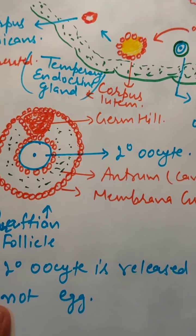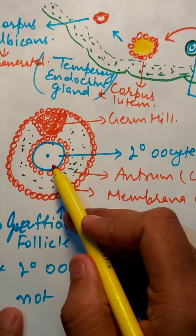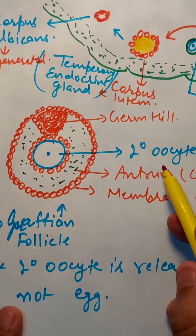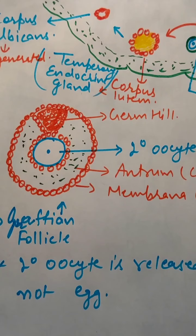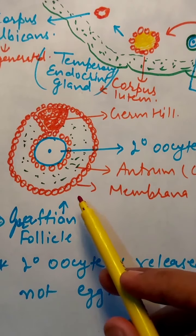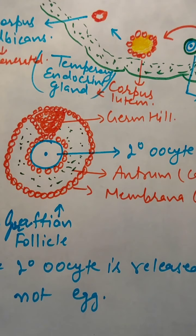The Graafian follicle contains a secondary oocyte inside it. The secondary oocyte is present in the Graafian follicle and it is covered with different layers of tissue and different types of cells.